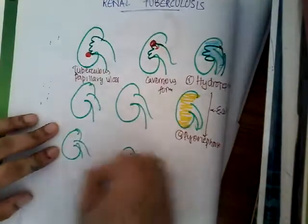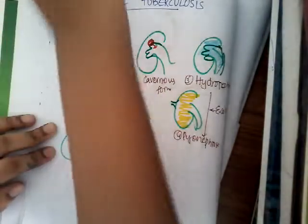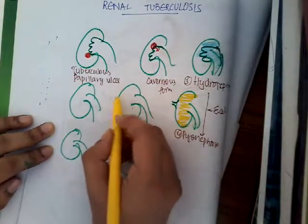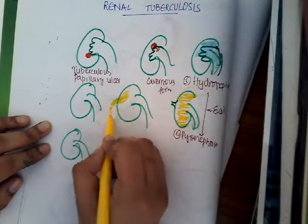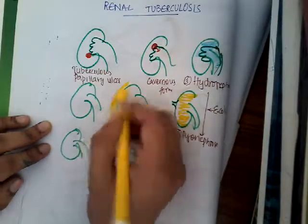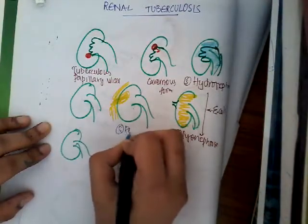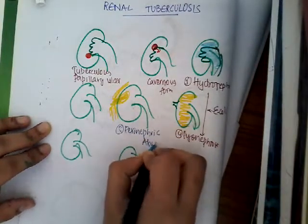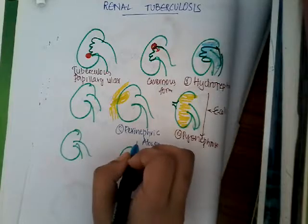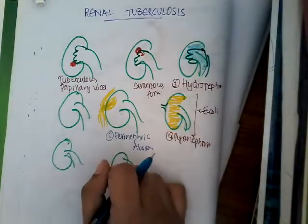The pyonephrosis which is there can rupture, and the contents come outside, forming a perinephric abscess. That is the fifth type — perinephric abscess.